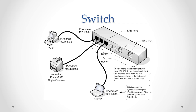Switches are similar to hubs but are more efficient in the way they distribute data packets. As with hubs, they connect a number of devices or computers together to form a local area network, for example a star network. However, unlike a hub, the switch checks the data packets received and works on its destination address or addresses, and sends the data to the appropriate computer or computers only.